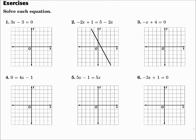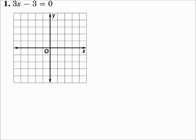Solve each equation. Number 1: 3x minus 3 equals zero. Remember, we're solving for x. Set the equation equal to zero, which it is — everything is on one side of the equal sign. Then replace the zero with f of x. So we really have f of x equals 3x minus 3.